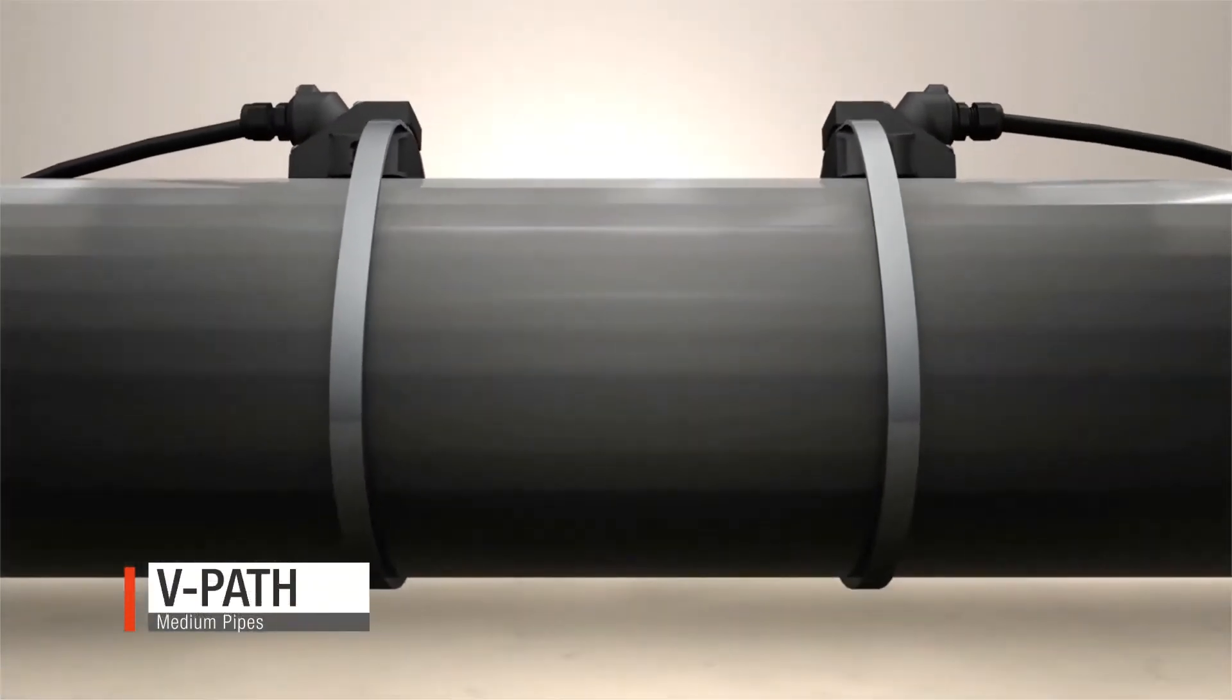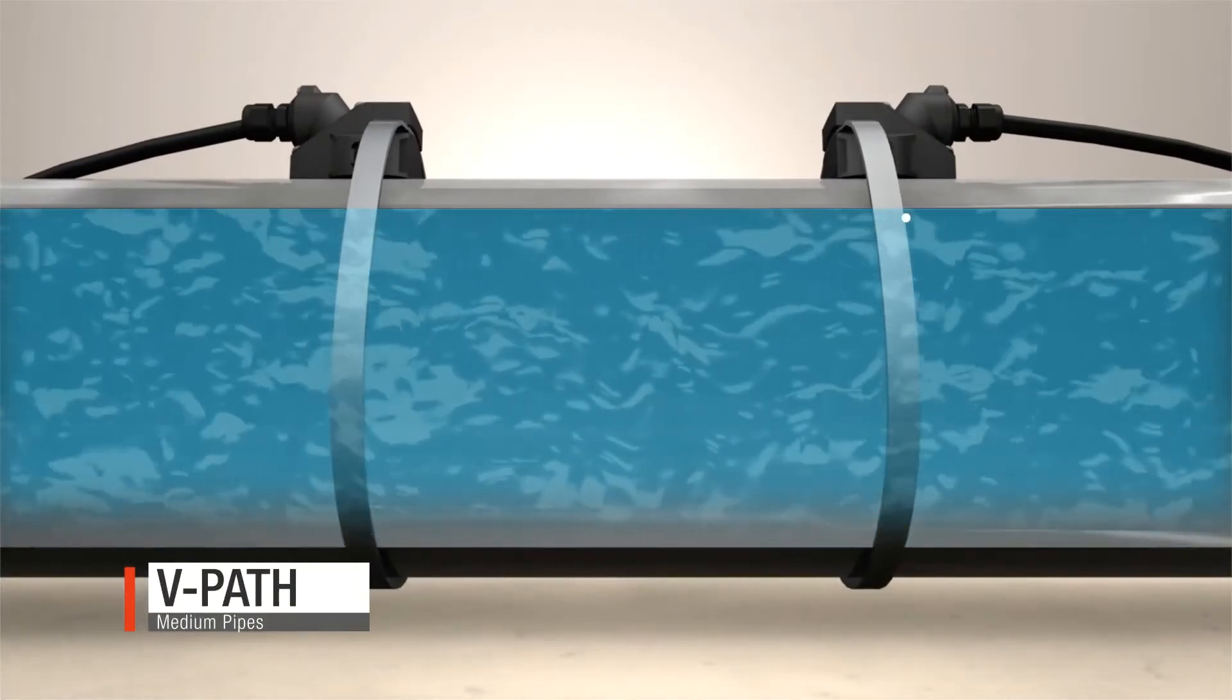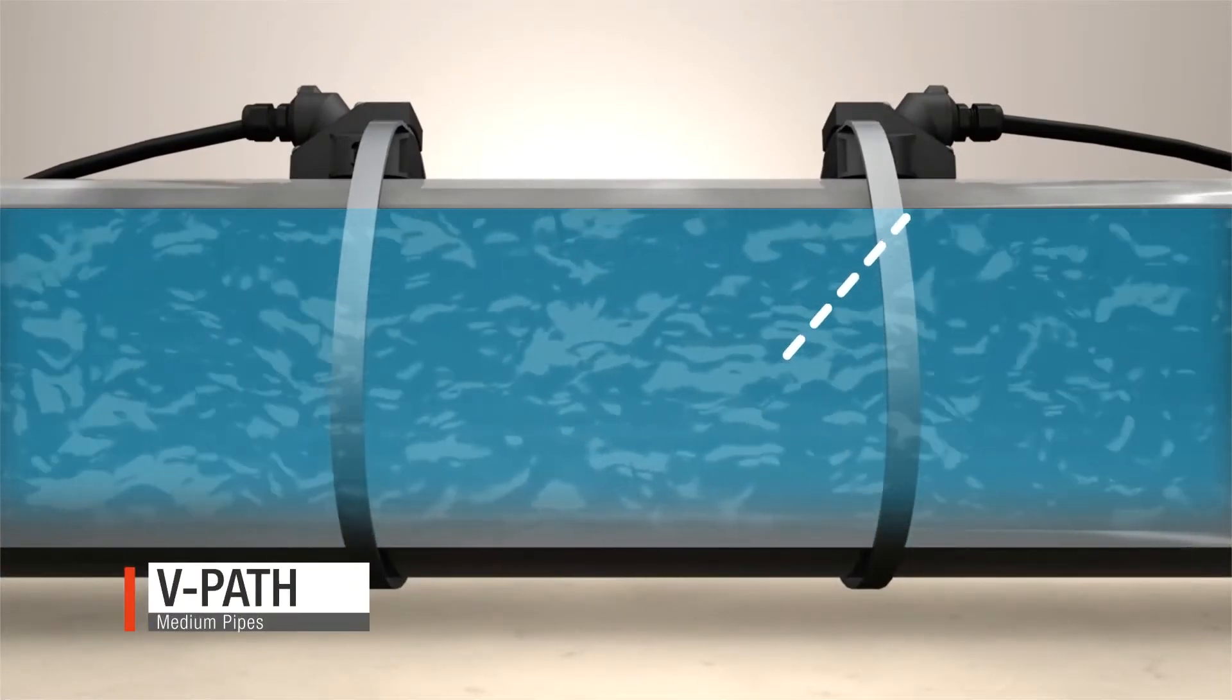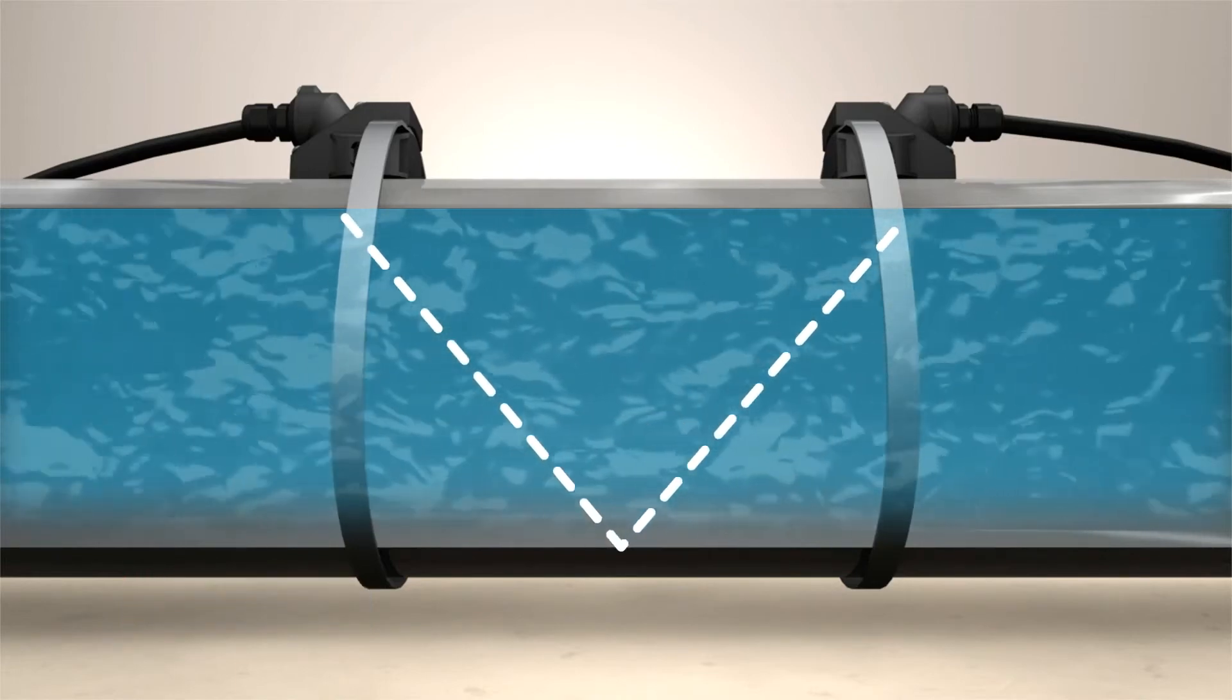A V path or 2 traverse has transducers mounted on the same side and signals reflect off the inside of the pipe. This positioning is easier to install.